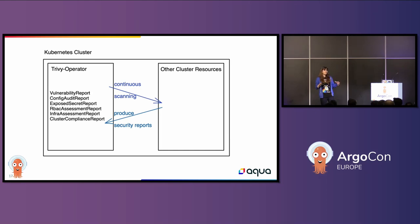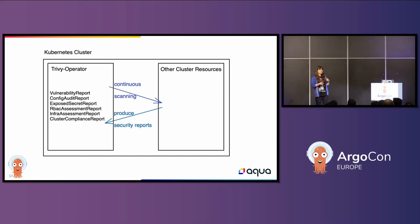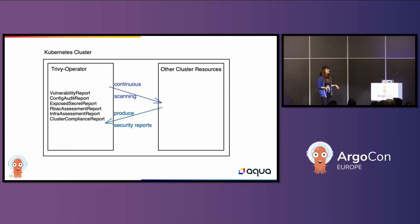If you don't identify issues before they hit your production environments, both KubeScape and Trivy have Kubernetes operators that live inside your cluster and scan your resources as they are deployed or changed within the cluster. For example, the Trivy operator does continuous scanning from within your cluster and produces scan reports based on what it can find, so you can still identify issues as they are running within your different environments.